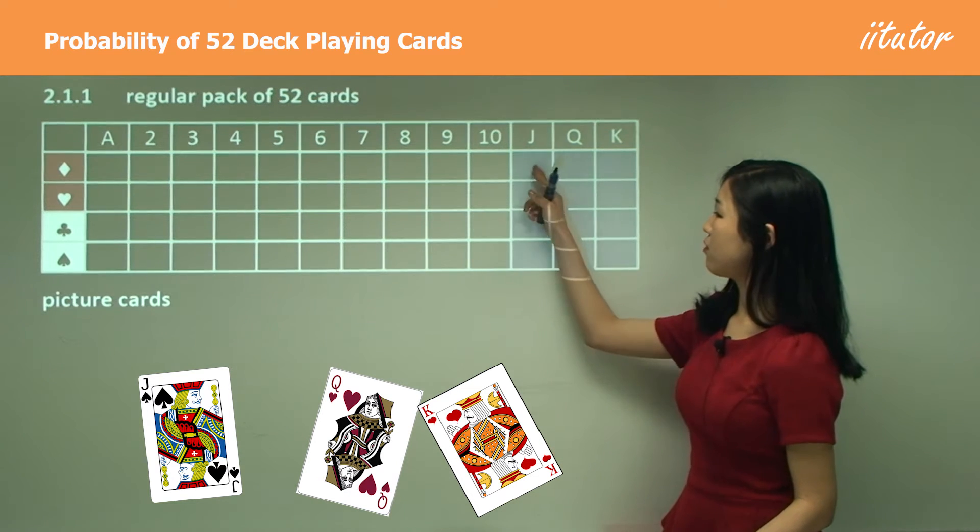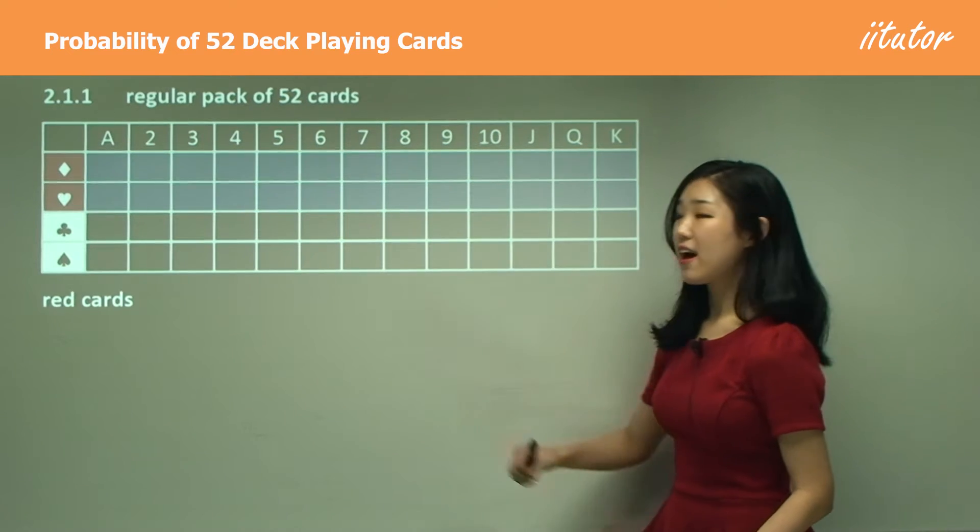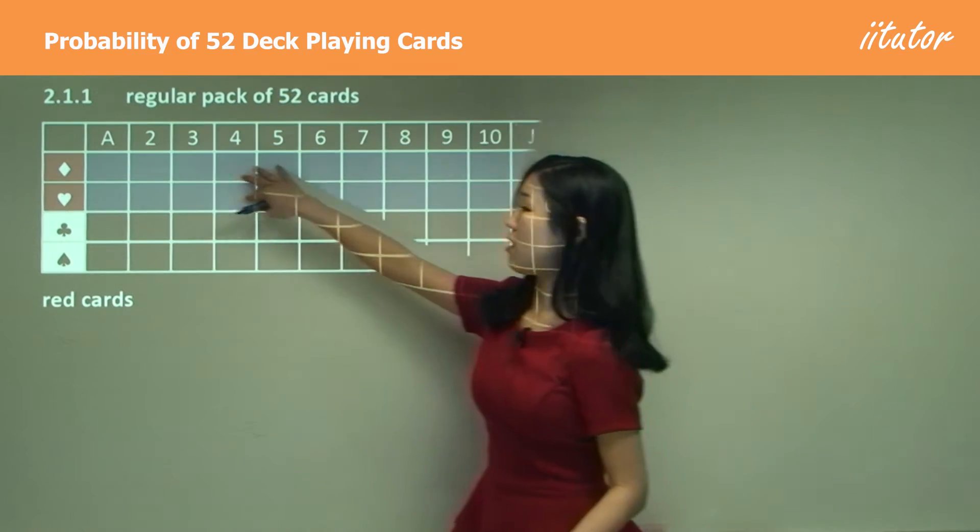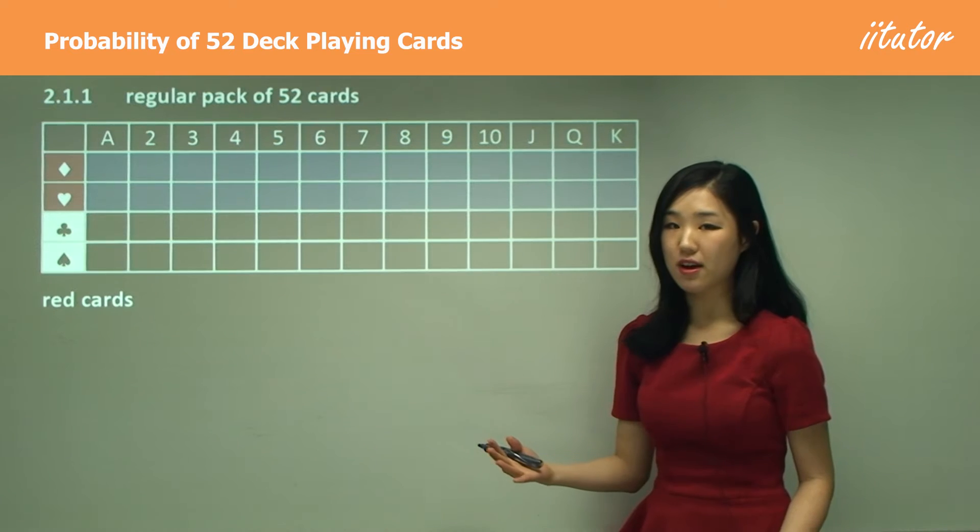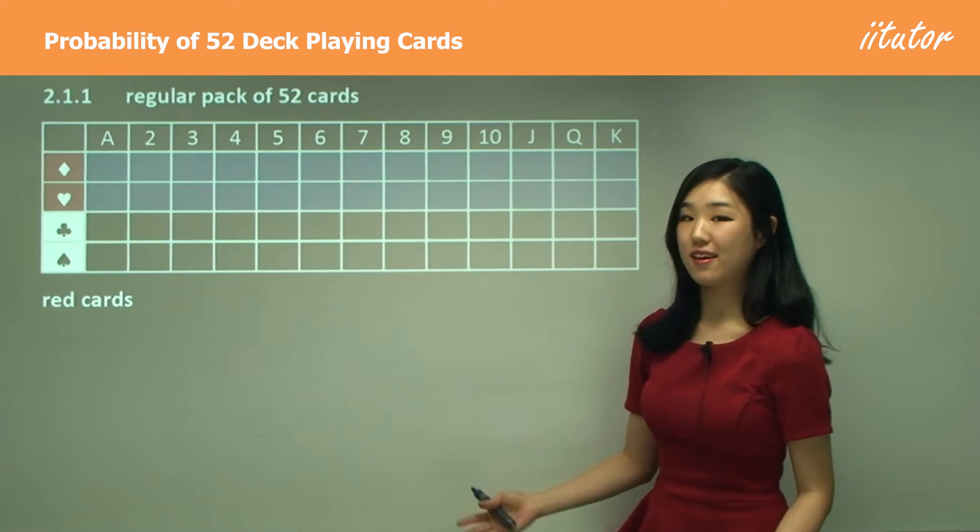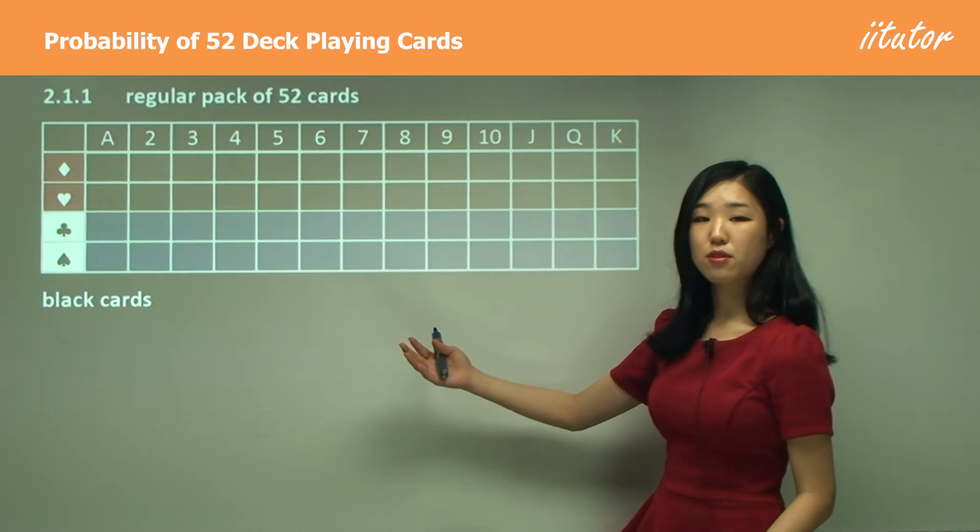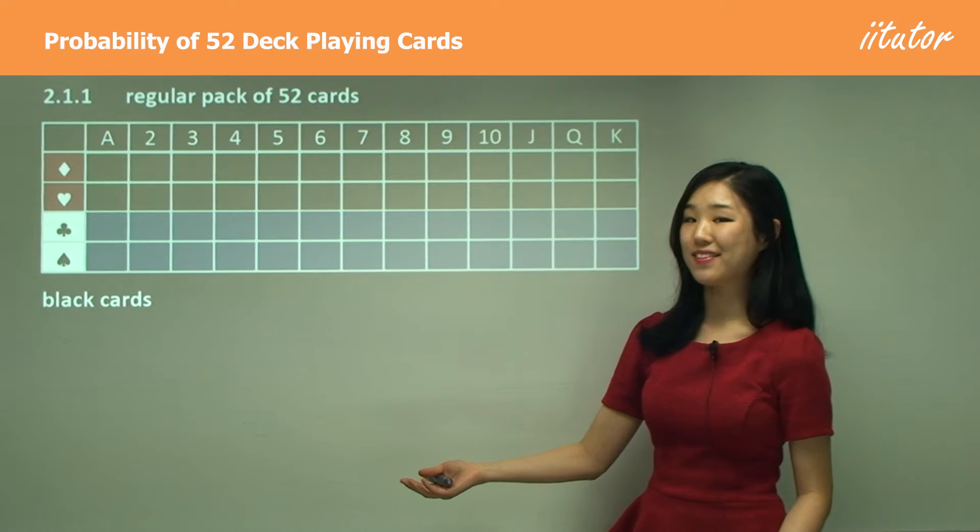Red cards are just these two—half of the cards are red, half are black. So red cards are exactly half. Black cards are these two, so again, similar to the red cards, half of the pack of cards—half the cards are black.